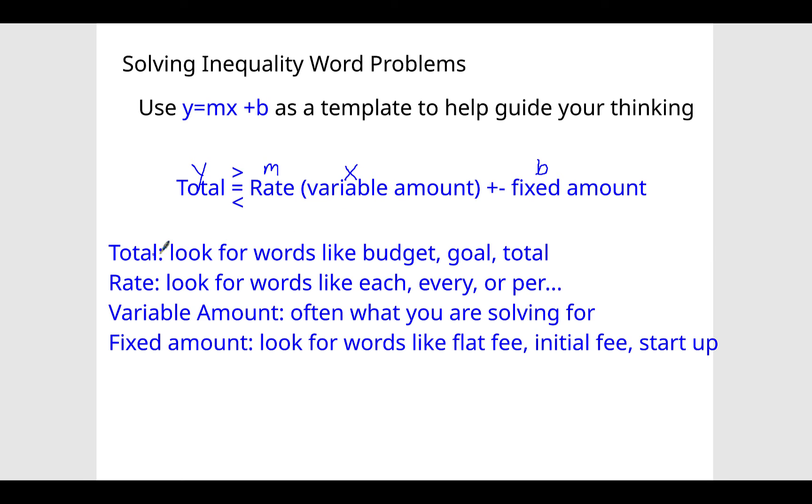And let me look down here, show you down here where I've got some words that you can look for to help you understand in the word problem something that's going to be equal to each of these four items, the total, the rate, the variable amount, and the fixed amount.